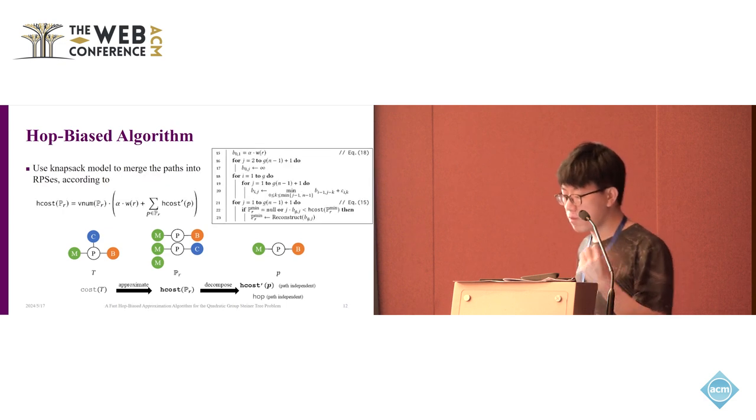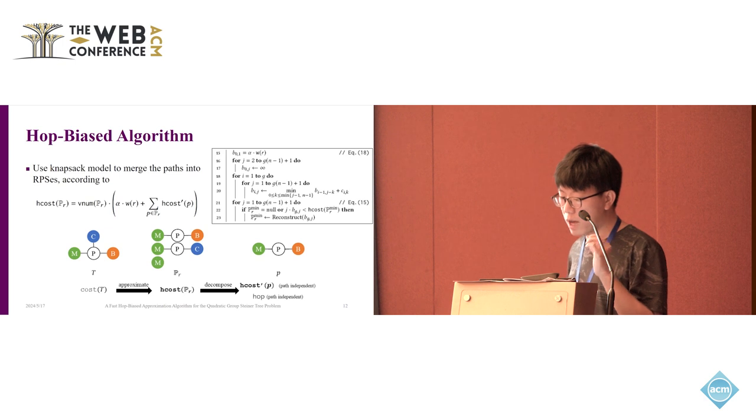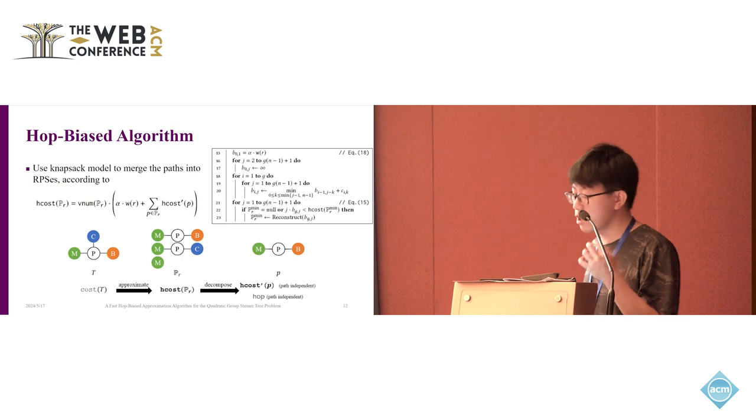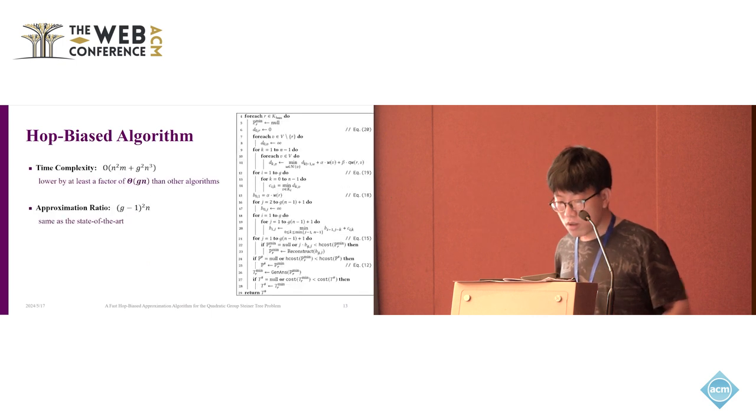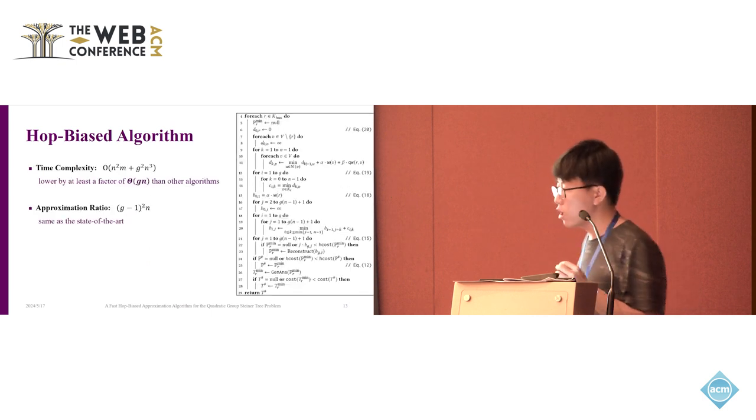After finding such paths, we can use the next step model to merge the paths into the RPS with each V-num. According to the definition of the H-cost function, we can easily calculate the min H-cost RPS by enumerating the V-num. So by here, we complete all the procedure of our HB algorithm.